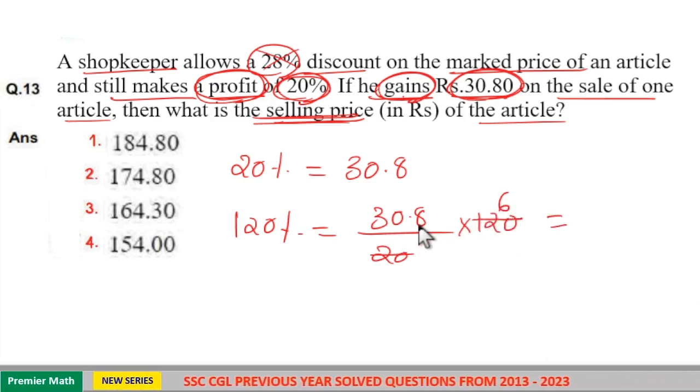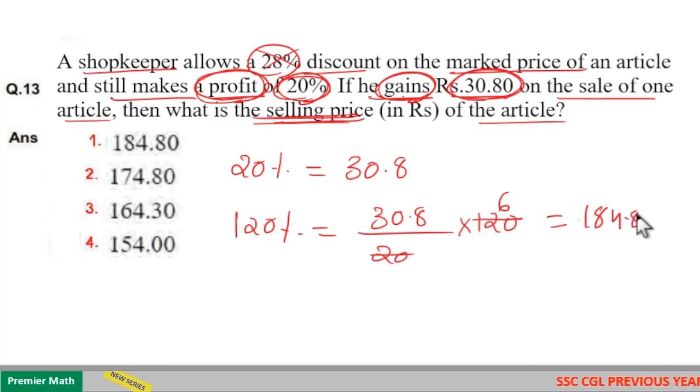Now 20 equals 6 times in 120. 6 into 30 is 180, 6 into 8 is 48, 6 into 0.8 is 4.8. So 180 plus 4.8 is 184.8. Option 1 is your answer.